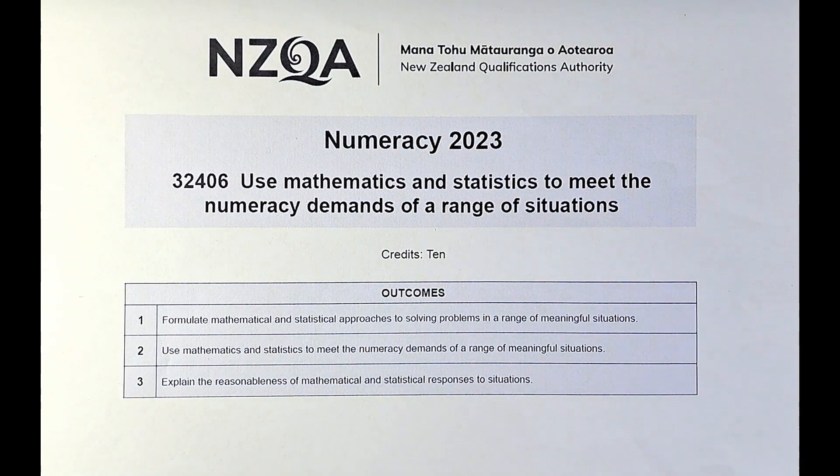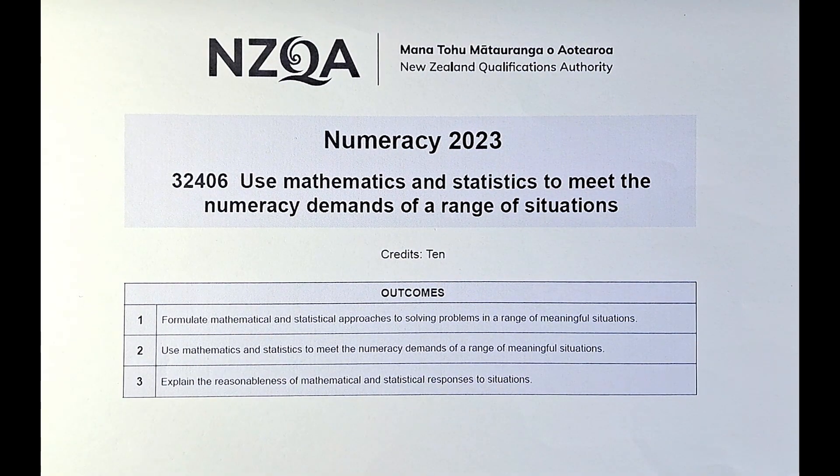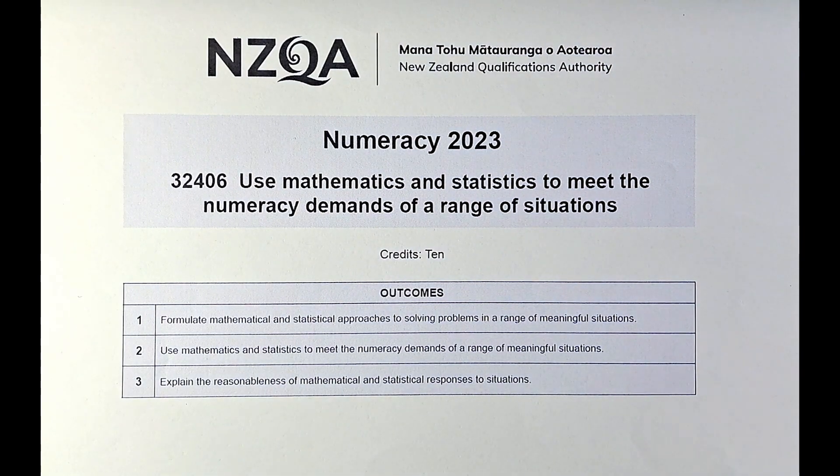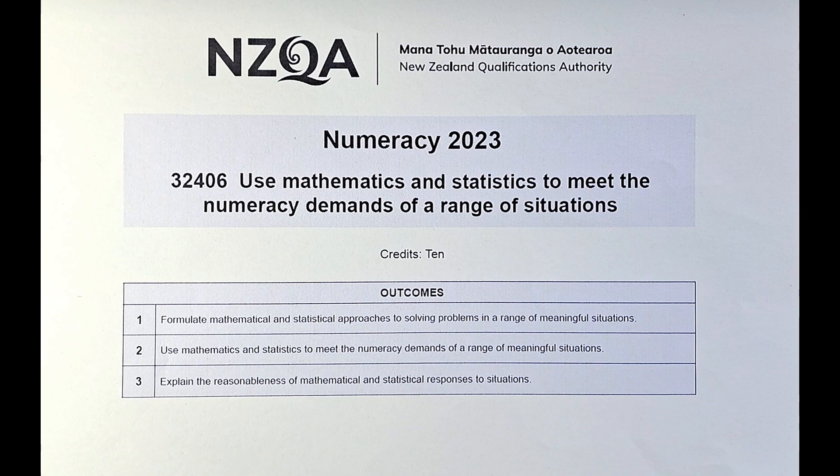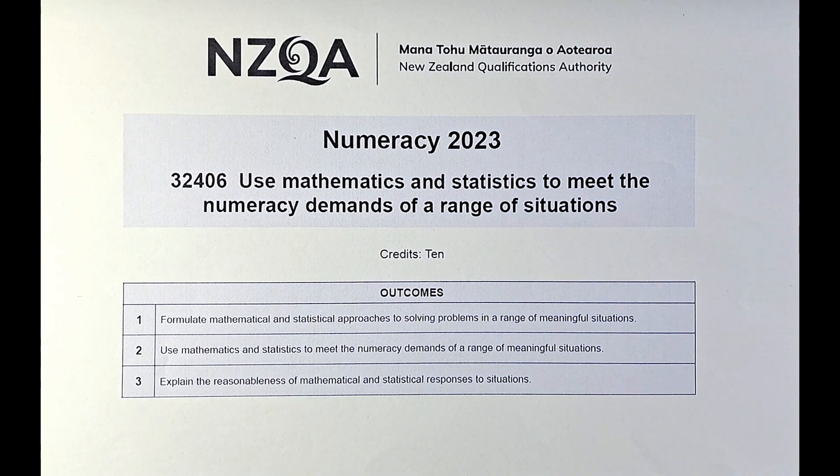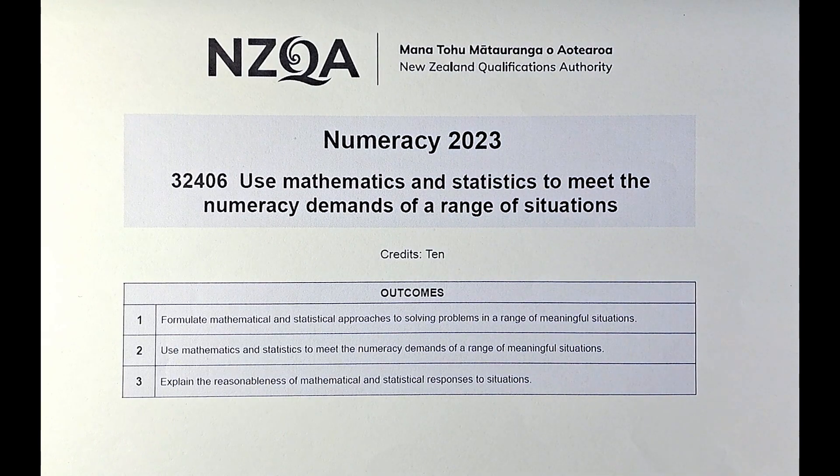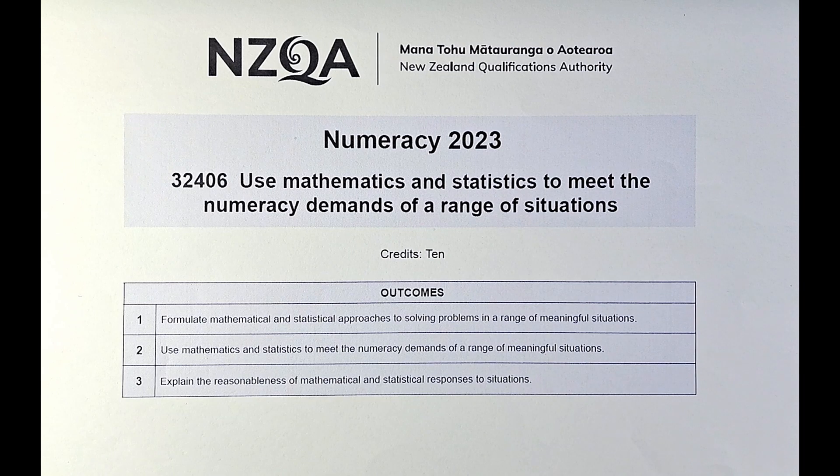Good day! In this video, we are going to try and solve the numeracy exam done in June 2023. This paper is a unit standard, 32406: Use mathematics and statistics to meet the numeracy demands of a range of situations. As it is a unit standard, you either get achieved or not achieved.